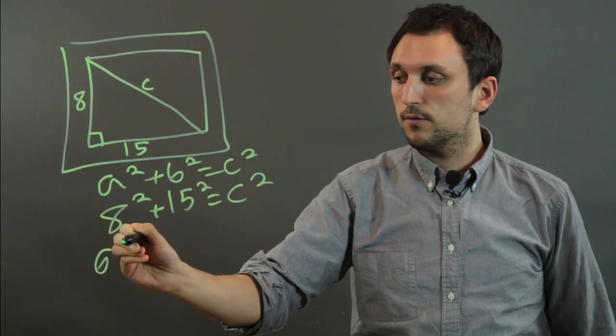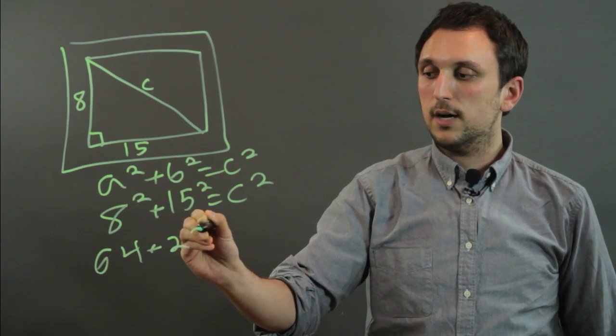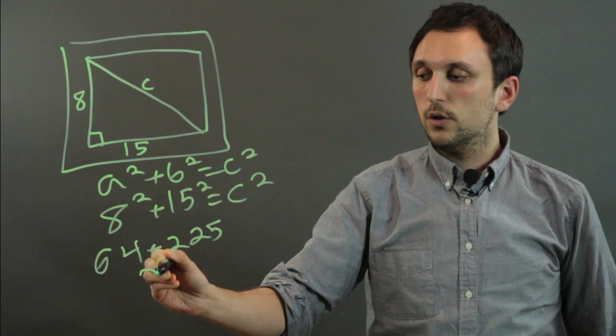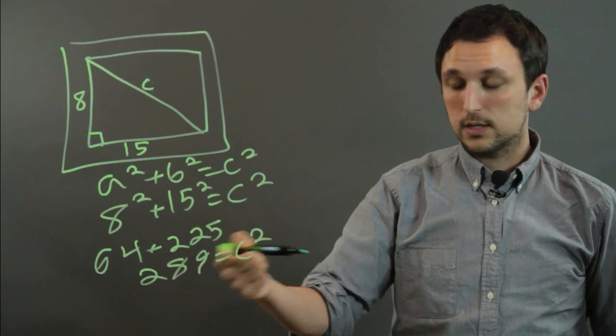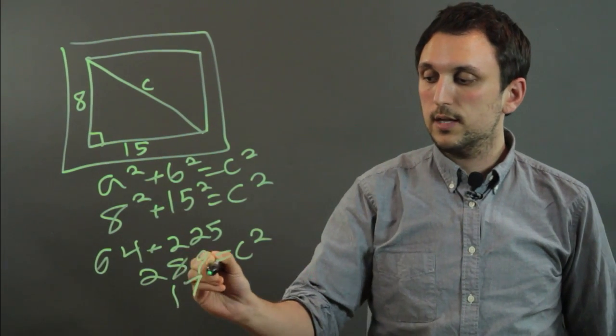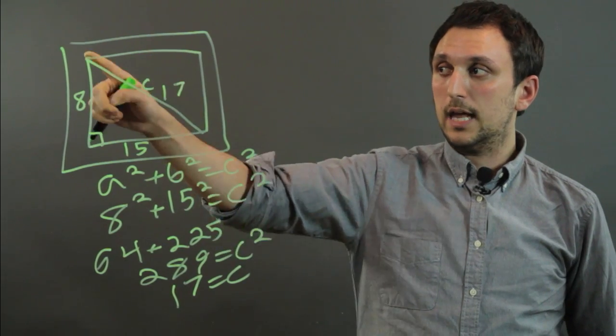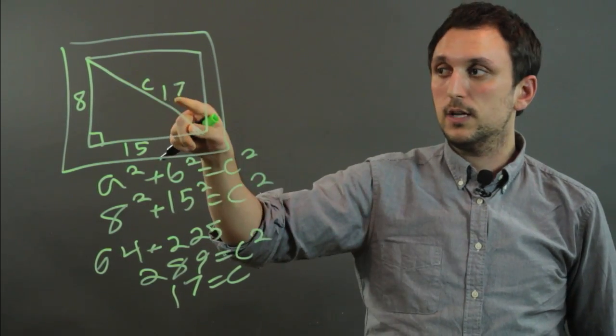Now, 8 squared is 64, and 15 squared is 225, so that's going to equal 289, which is C squared, and you take the square root of both sides, and you get 17 equals C. So the diagonal length of your TV screen is 17 inches.